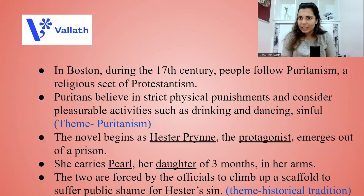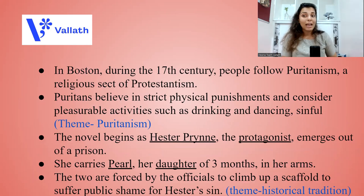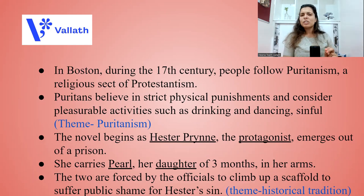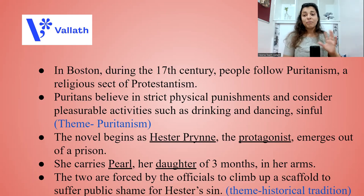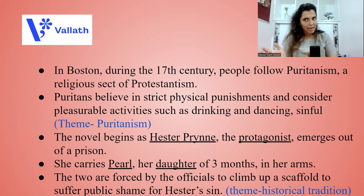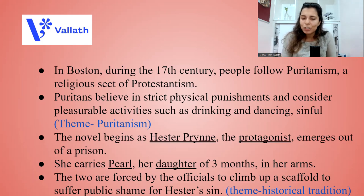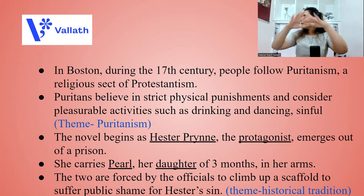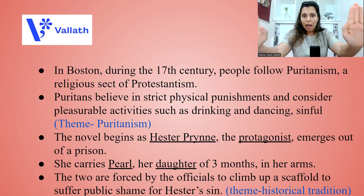In Boston during the 17th century, people followed Puritanism, a religious sect of Protestantism. Puritans believe in strict physical punishments and consider pleasurable activities such as drinking and dancing sinful. The theme of Puritanism is discussed here. The novel begins with the protagonist, Hester Prynne, who emerges out of a prison — imagine a woman coming out of prison.